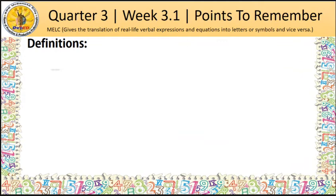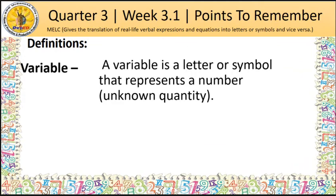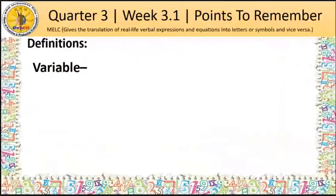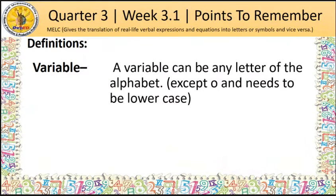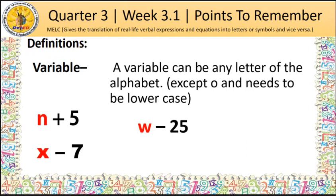A variable is a letter or symbol that represents a number which is an unknown quantity. It can be any letter of the alphabet except O and needs to be lowercase. The red-colored letters are some of the examples.